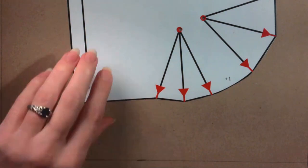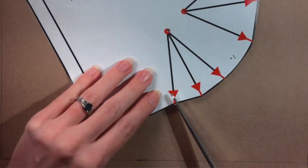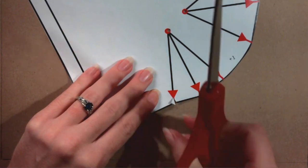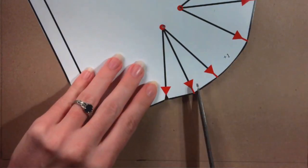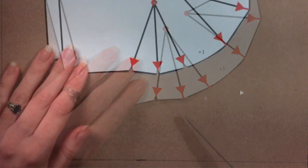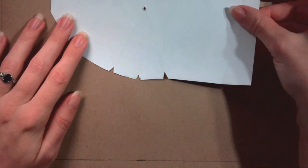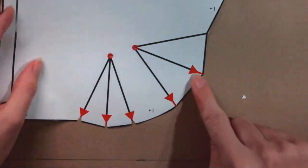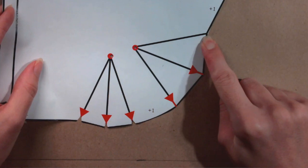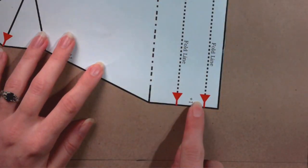The notches marking the bottom of the darts should also be cut out. There is one red triangle missing. A notch needs to be cut on the last line of the top dart too. Cut the notches marking the fold lines as well.